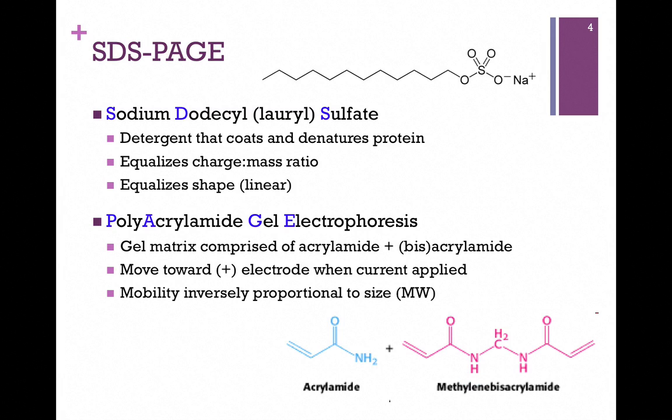We're going to take our solution of protein that has been coated with SDS, and we're going to apply it to a gel matrix. This gel is composed of polyacrylamide, which is a mixture of acrylamide, that's the bottom left, and bisacrylamide on the right. And so it forms this porous matrix, similar to the size-exclusion matrix we saw in the previous slide.